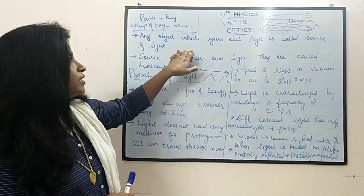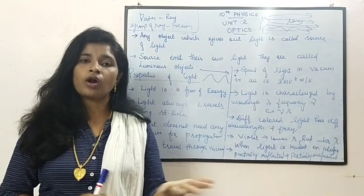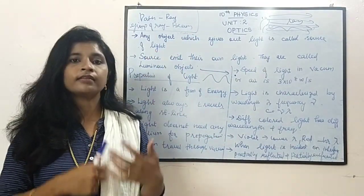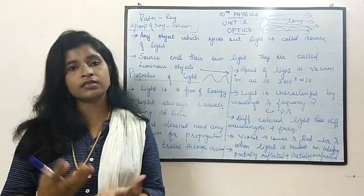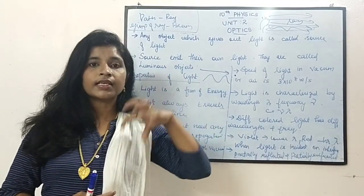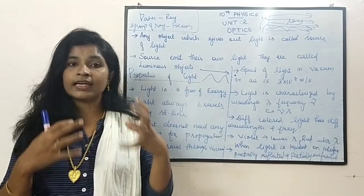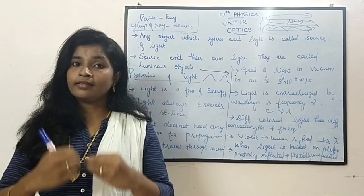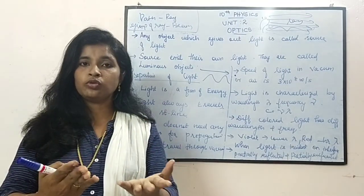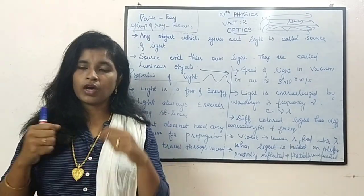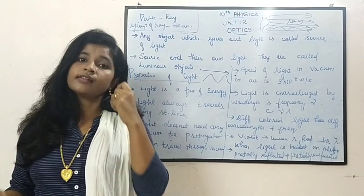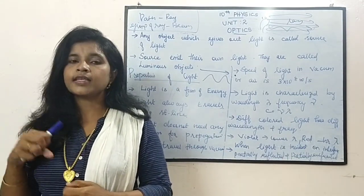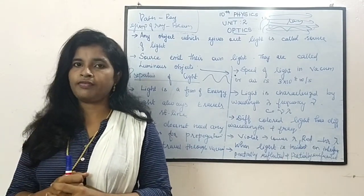If the bulb is giving out the light, the bulb is called as the source of light. If the sun is giving the light, the sun is called as the source of light. If you are using a torch light, the torch light is the source of light.